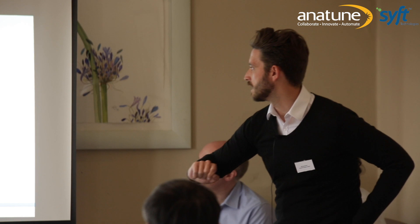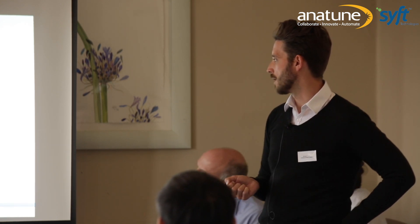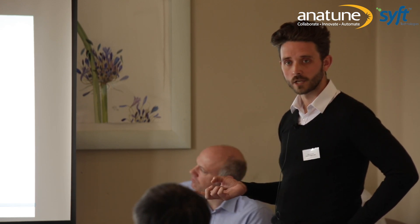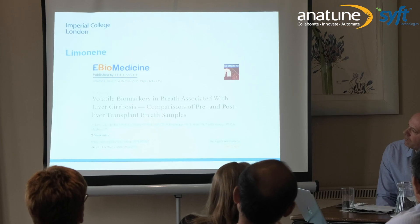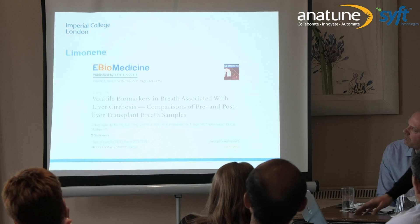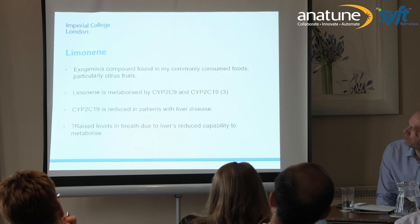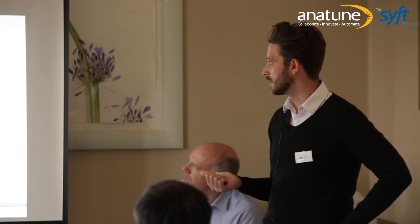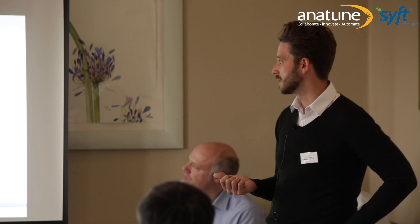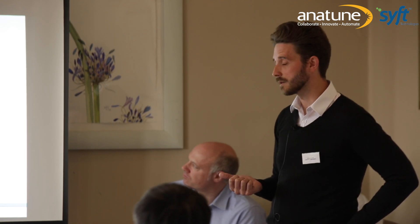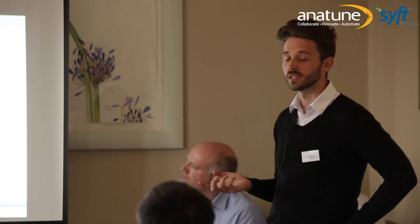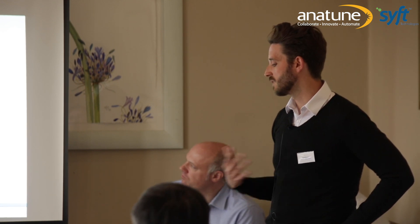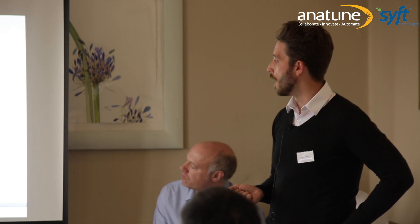We're quite interested in limonene. A paper published in 2015 in The Lancet by Fernandes del Rio-Eyal looked at volatile organic compounds in the context of liver cirrhosis in pre- and post-transplant patients and identified a significant increase in the level of limonene in patients with cirrhosis. Limonene is an exogenous compound found commonly in our diet, particularly in citrus fruits. It's metabolised by the CYP2C9 and CYP2C19 enzymes, and CYP2C19 is reduced in patients with liver disease — so the liver can't metabolise limonene as well, and therefore it's higher in those patients.